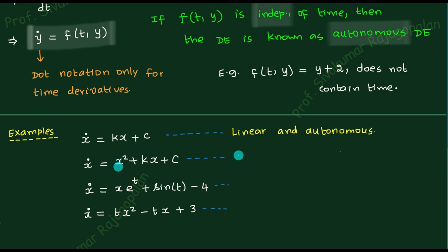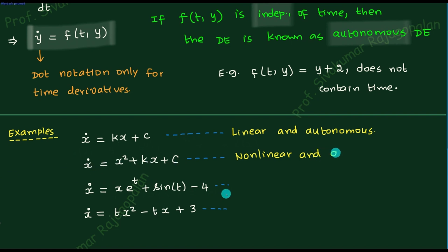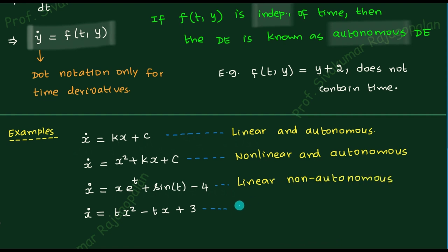Now the second equation: I have x-squared. Unknown squared means non-linear, so write down non-linear. What about autonomous or not? In the entire equation, time is not visible, so write down autonomous. Now you should be able to tell that the third equation is linear and non-autonomous, and the last equation will be non-linear non-autonomous.